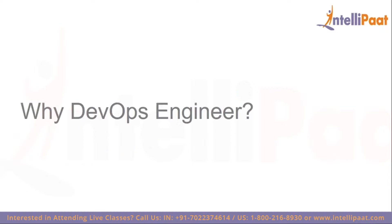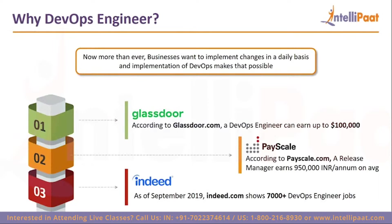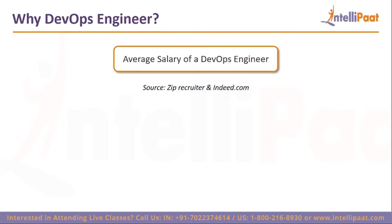So why should you become a DevOps engineer? According to Glassdoor, the average salary of a DevOps engineer is $100,000 in the US. According to PayScale, a release manager — essentially a DevOps manager — earns around nine lakh fifty thousand per annum on average in India. According to Indeed, as of September 2019, there are 7,000-plus vacant DevOps engineering jobs you can apply to.